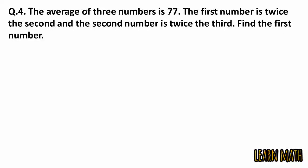The fourth question is the average of three numbers is 77. The first number is twice the second, and the second is twice the third. Find the first number. These are four options.